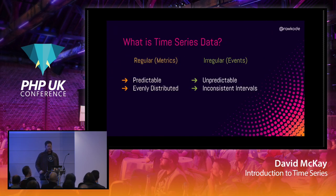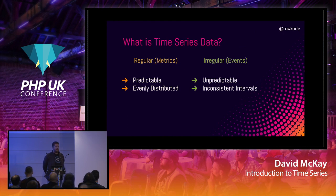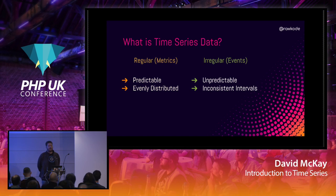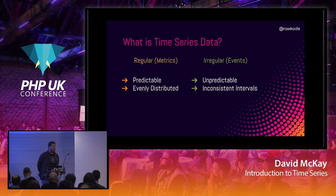There are actually two classifications of time series data. First, regular time series data — I'll call these metrics. What makes it a metric is that it is predictably available: regular time series should always be available at the same interval. Examples: CPU usage. The second type is irregular — an irregular time series is unpredictable and inconsistent in timing, and we'll call those events.